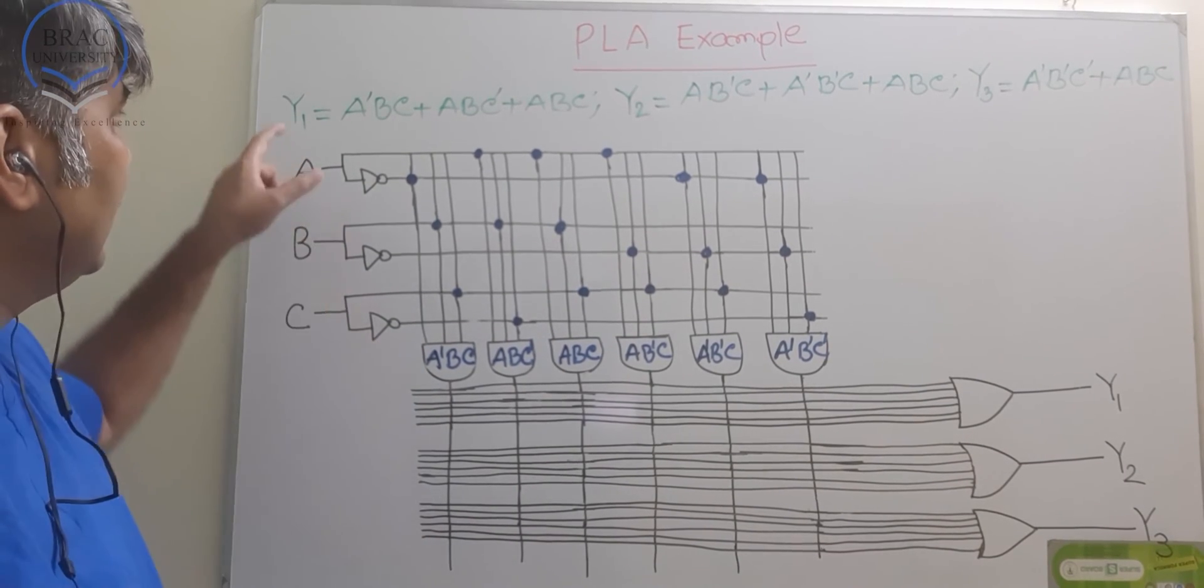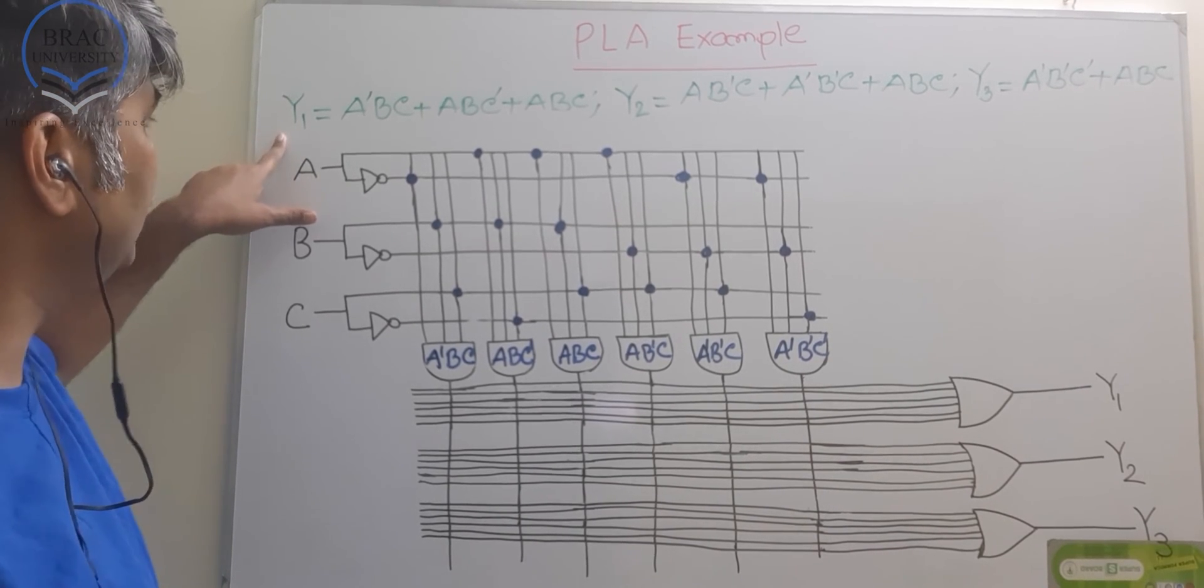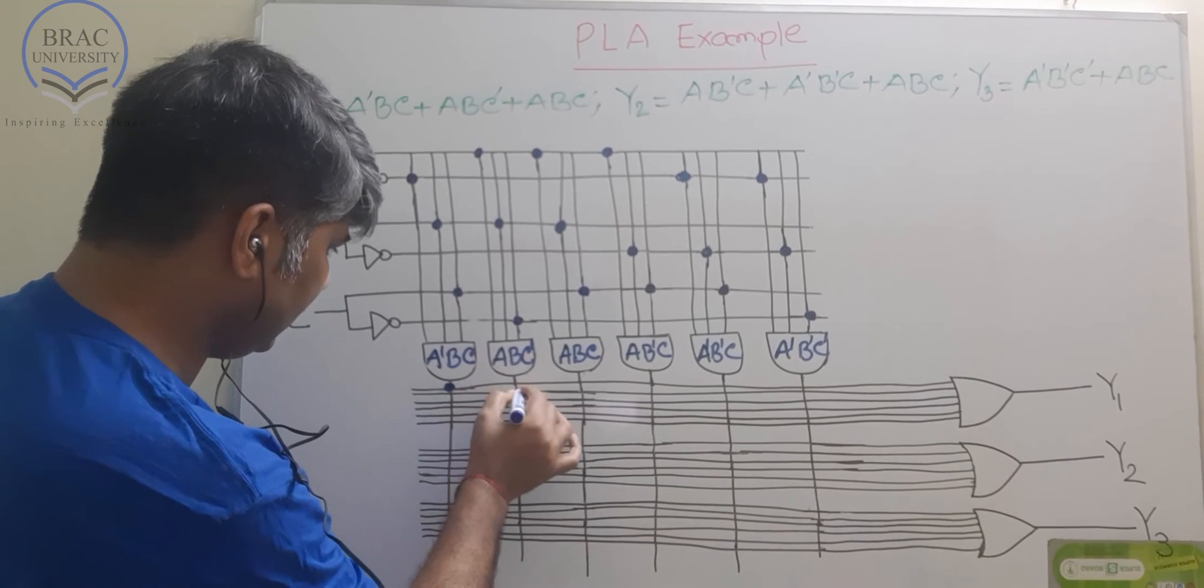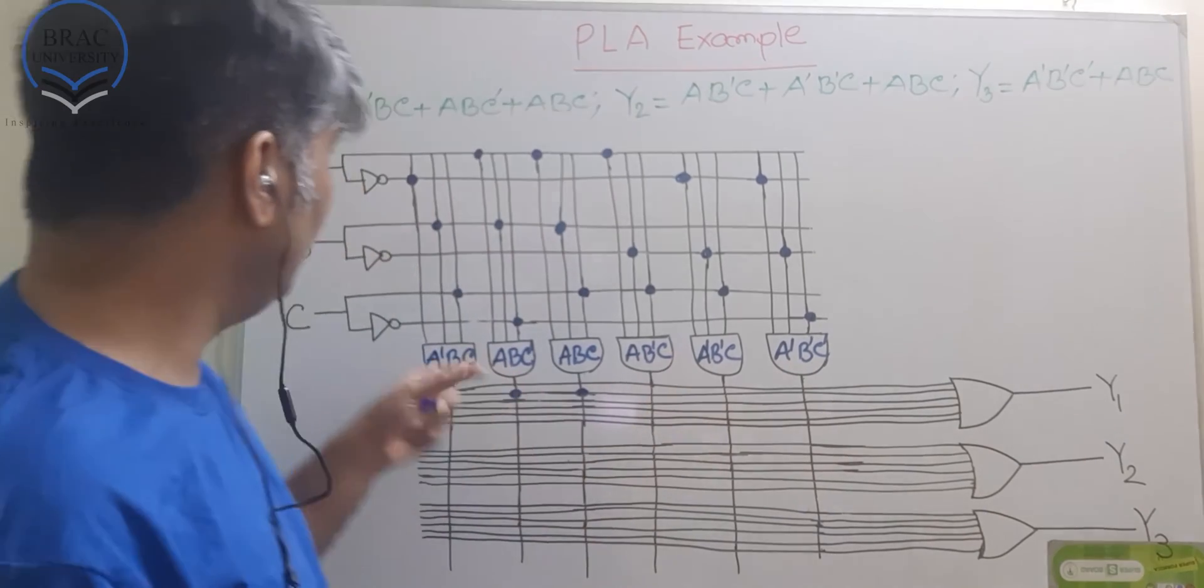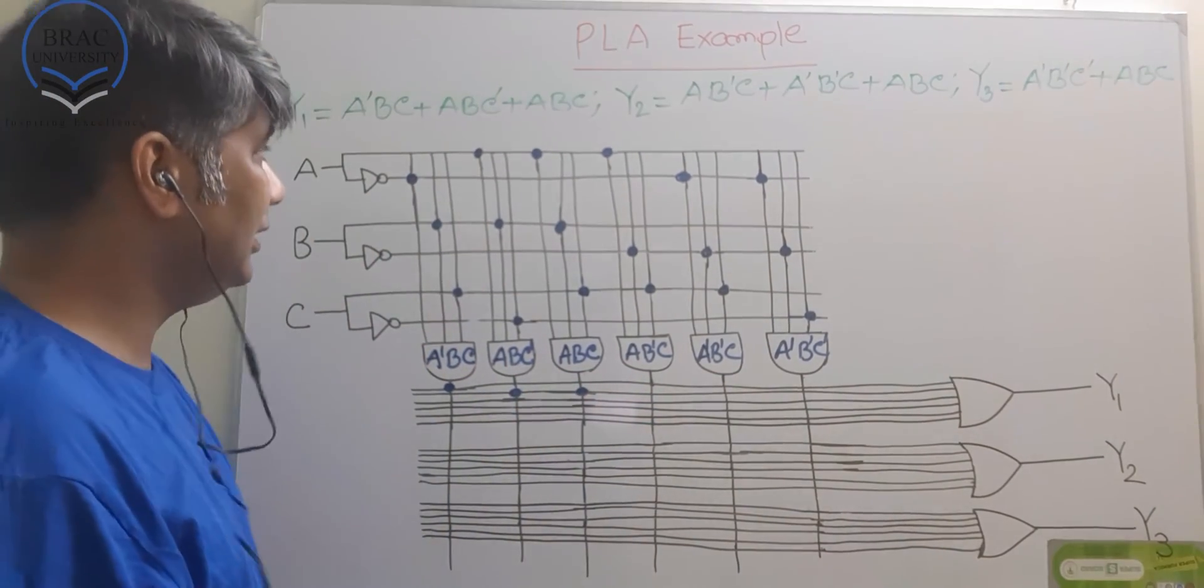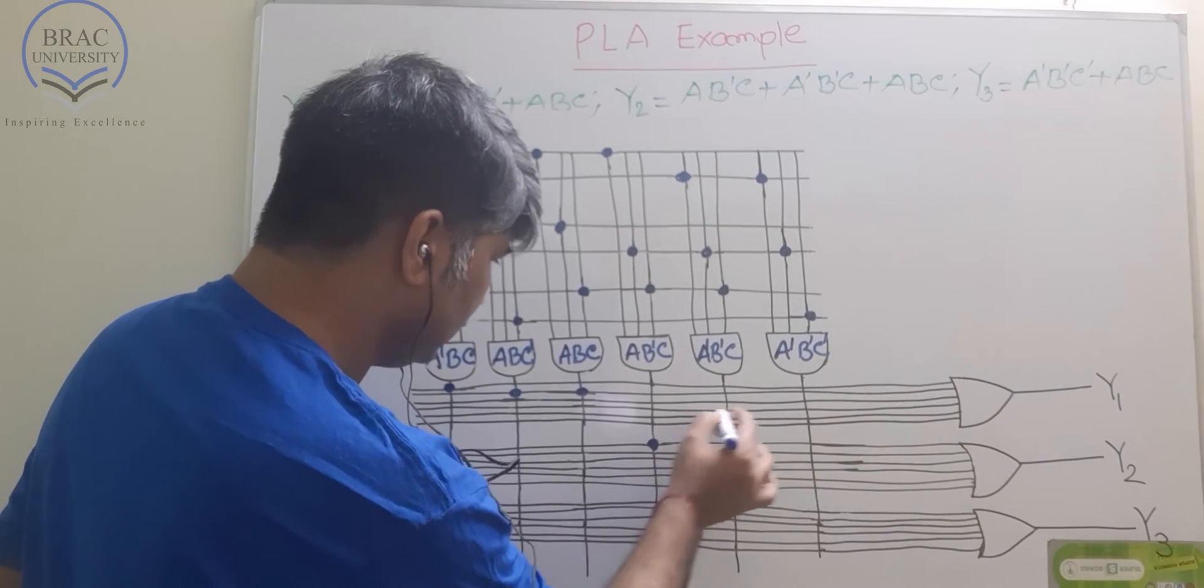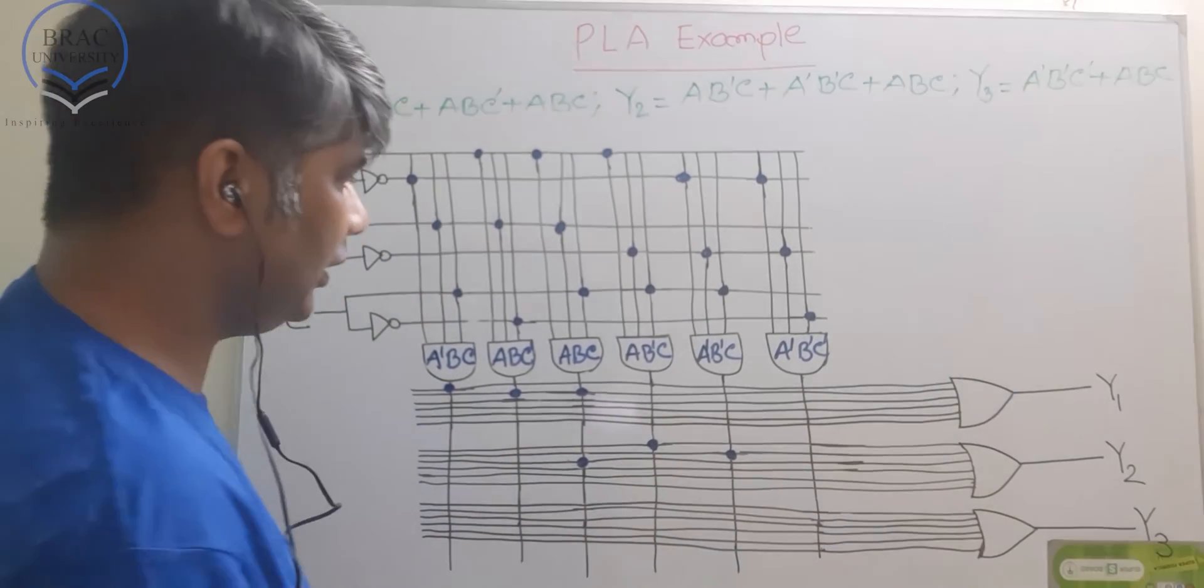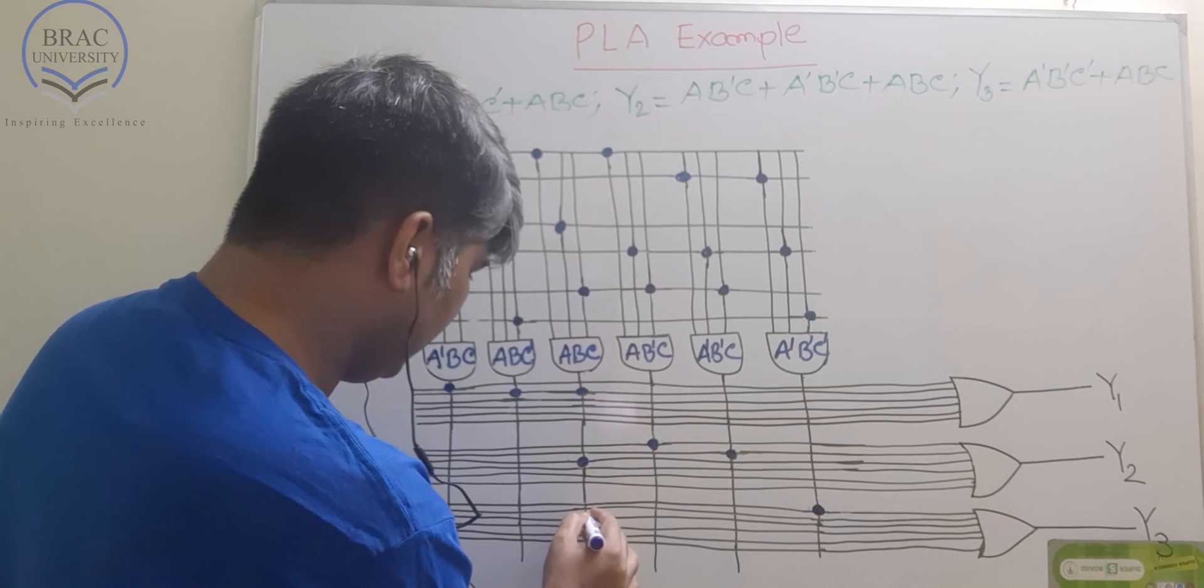Now, we need to generate the final output, which is Y1, Y2 and Y3. For Y1, what do we need? We need this one, this one and this one. If we solder here, if we connect this link, we connect this link and if we connect this link, then these three will give us our required inputs for Y1. Y1 is ready. Similarly, for Y2, we need this one, this one and ABC.